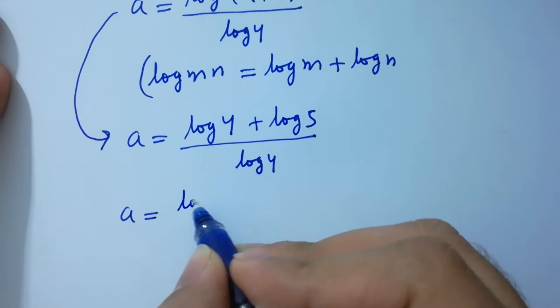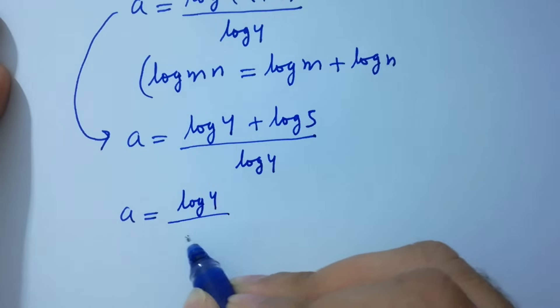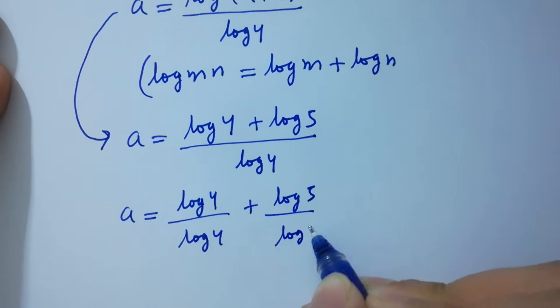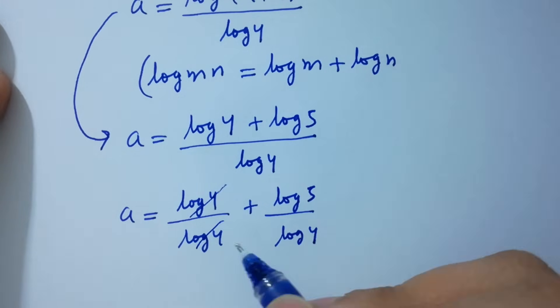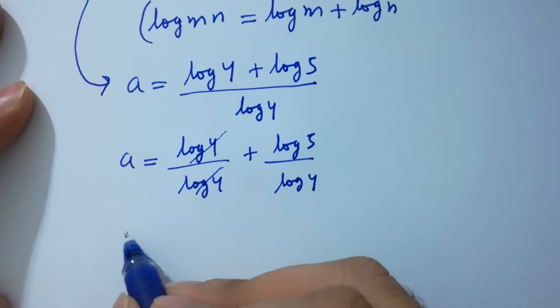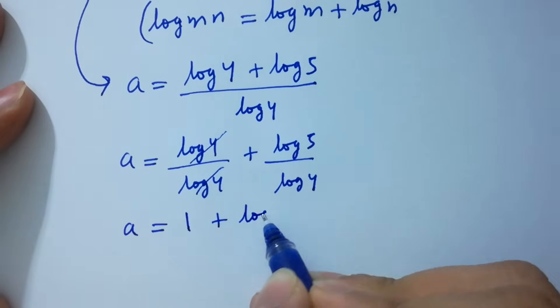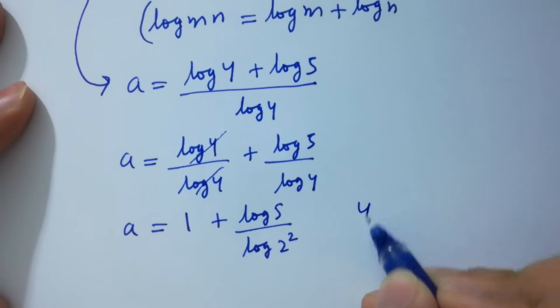Log 4 and log 4 cancels. A equals 1 plus log 5 over log 2 square, as 4 equals 2 times 2 which is equal to 2 square.